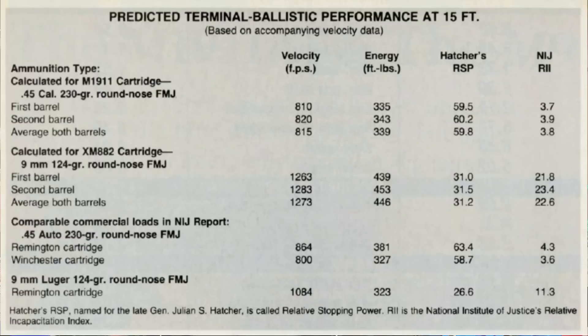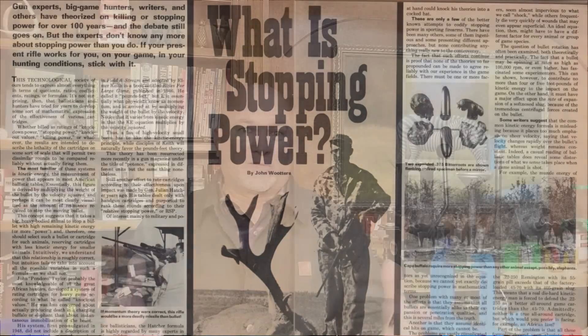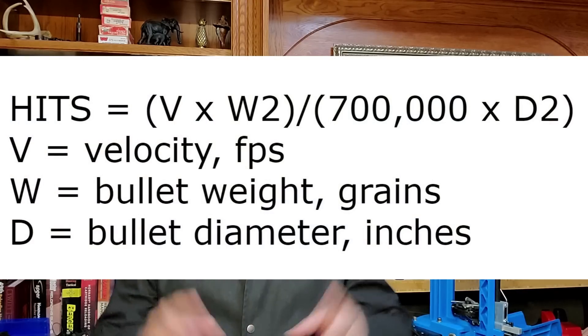Later on, Hatcher's formula suffered similar issues when applied to rifle ballistics. Then several gun rag writers decided they were going to make their own lethality indexes and killing power formulas. Finally, manufacturers like Hornady decided to jump into the mix with their own HITS formula. The problem with these newer killing power formulas is that they put a big emphasis on sectional density. As I explained in my hunting bullet hype video, sectional density isn't really what equates to penetration with modern hunting bullets — mass and bullet construction is what determines penetration to a larger extent.